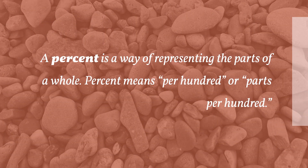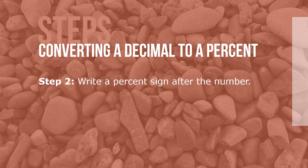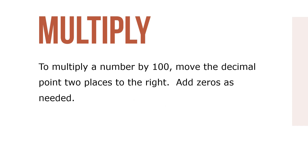A percent is a way of representing the parts of a whole. Percent means per 100 or parts per 100. Here are the steps for converting a decimal or a whole number to a percent. Step 1: Multiply by 100. Step 2: Write a percent sign after the number. Note: if the percent is a fraction or a mixed number, change the fraction to a decimal, then follow steps 1 and 2. To multiply a number by 100, move the decimal point two places to the right. Add zeros as needed.